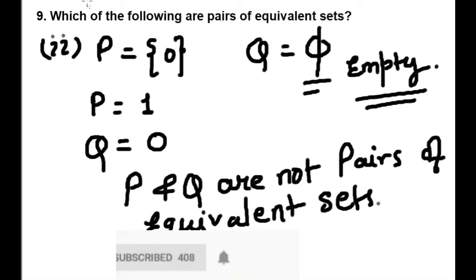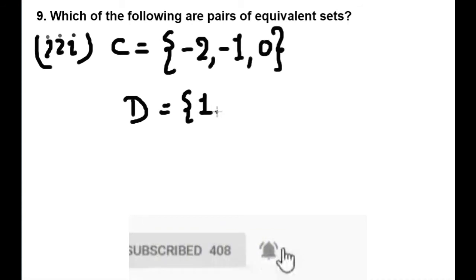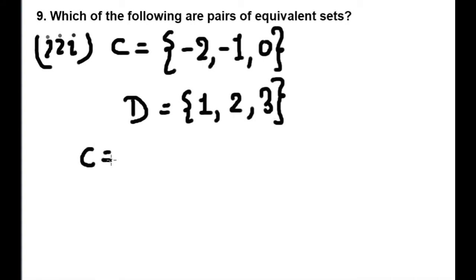Okay, let's see next question, next set third number. C = {-2, -1, 0} and D = {1, 2, 3}. Again we find number of elements: 1, 2, 3 - three elements in C, and in D: 1, 2, 3 - three elements. C and D are pairs of equivalent sets.